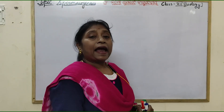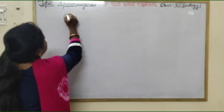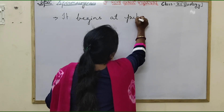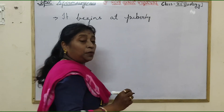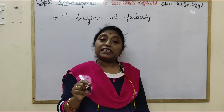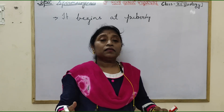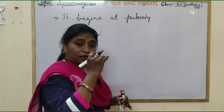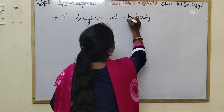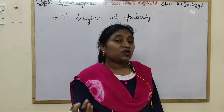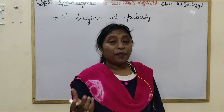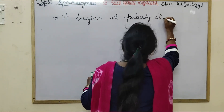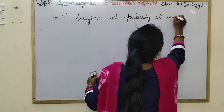Spermatogenesis begins at puberty in males. Puberty is the time when the sex organs become mature — when the gonads are ready to start the production of gametes. It begins at puberty, at the age of about 13 to 15 years.